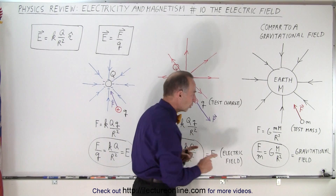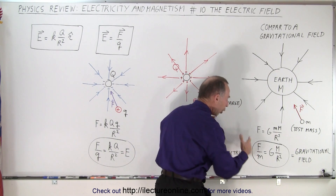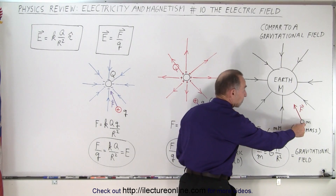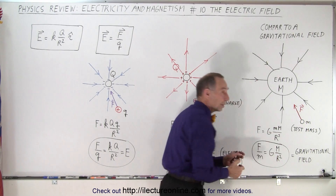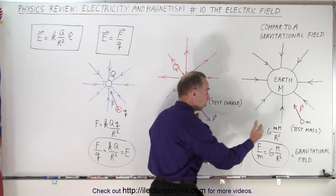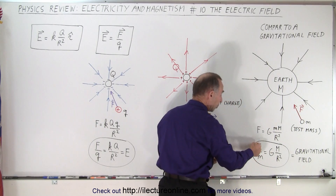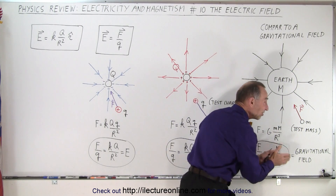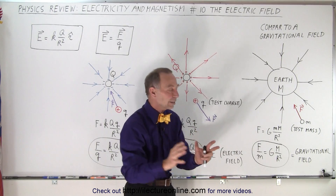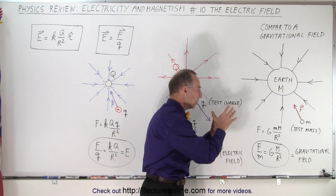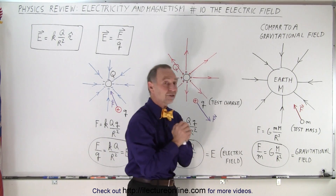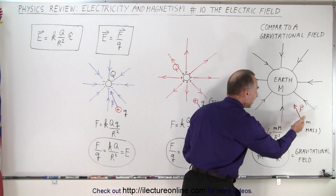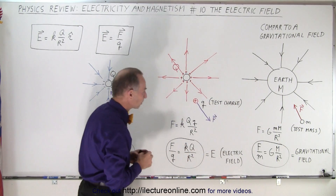What is important to know is that this ratio will always be the same number. If we make the test mass twice as big — 2m — then the force experienced would be twice as much, 2F, and 2F divided by 2m would still be the same ratio. It has no impact on the gravitational field. That ratio will always be the same for any size test mass.